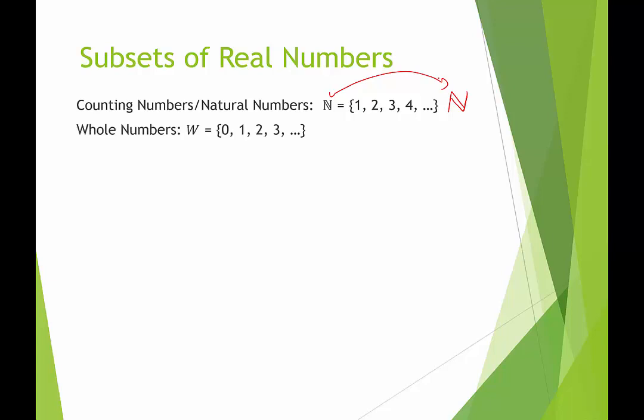The next set of numbers would be the whole numbers. Now you'll notice that W is not fancy and that's because the whole numbers, unfortunately, they don't get a fancy set name. So I just called it uppercase W, but that's not universally accepted. The set of whole numbers is the set of counting numbers with the addition of zero. So that's the only difference. We just include zero in the whole numbers.